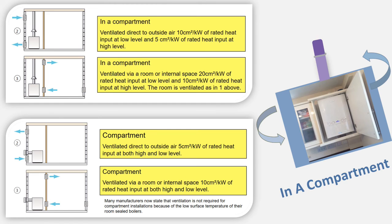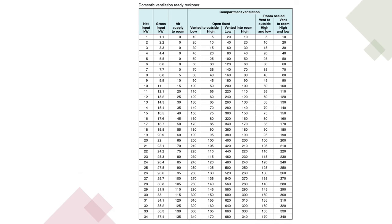All gas books have a ready reckoner chart which will show you the ventilation requirements under any of those circumstances. You simply look at the kilowatts, see whether the appliance is open flued or room sealed, and whether it's vented to the outside or vented into a room. Then, as with the flueless chart, you line both up and it gives you the result for your high and low ventilation — a very simple chart.